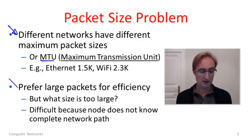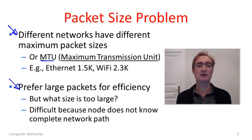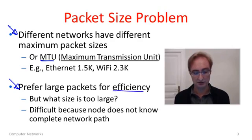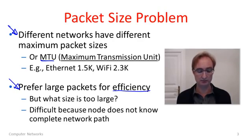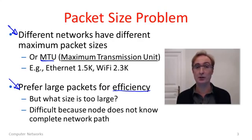The problem arises because not only do different networks carry different packet sizes, but we would like to send packets that are as large as will fit through the network. The reason for this is efficiency. If we send large packets, we'll spend fewer bits sending headers, and routers will also have to process fewer packets to get the same amount of information through. So we want a large size — but what large size? What size is too large and what size is okay?